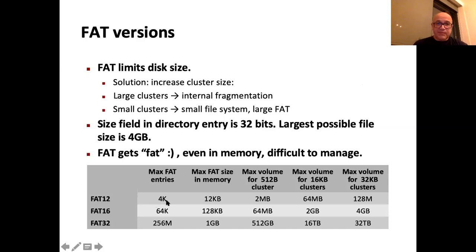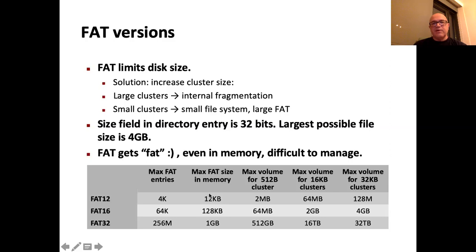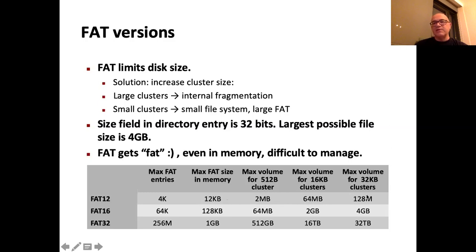In FAT12, because of the 12-bit limitation, you can have only about 4K entries in the FAT, each occupying 1.5 bytes, giving about 12 kilobytes of FAT—which fits easily in memory. Depending on cluster size (512 bytes, 16 KB, 32 KB), you can cover from a floppy disk (2 MB) up to 128 MB at most. In FAT16, with 16-bit entries, we have 64K entries, each 2 bytes, giving 128 KB of FAT. With cluster sizes up to 32 KB, the maximum volume is about 2 GB.